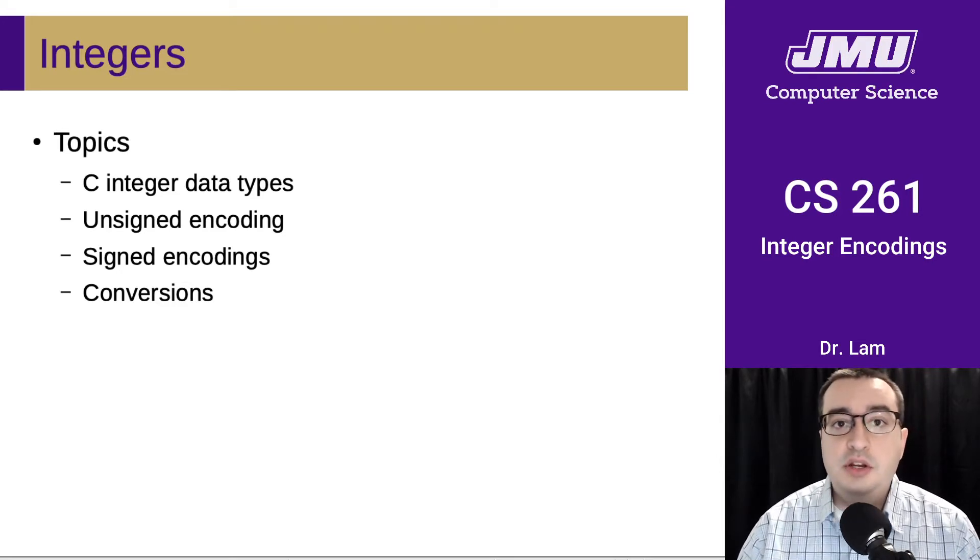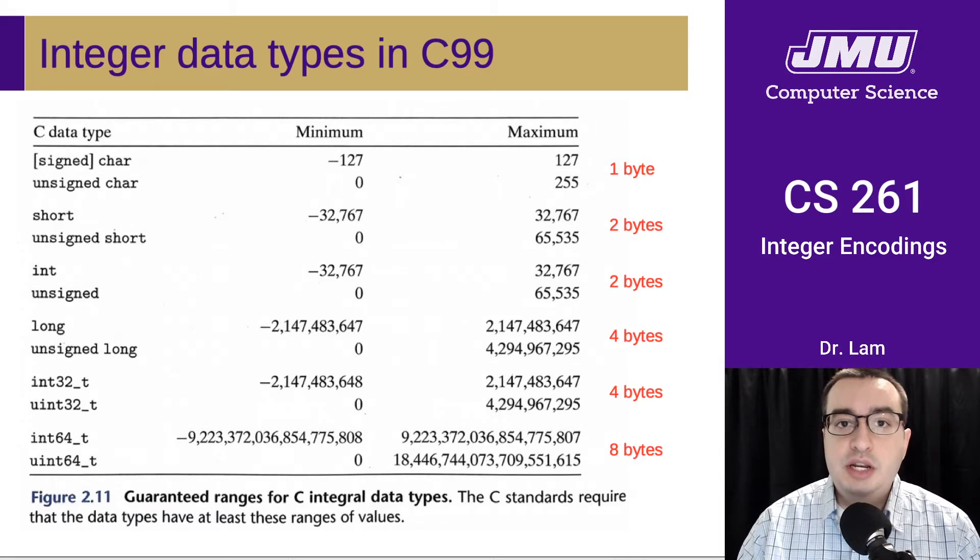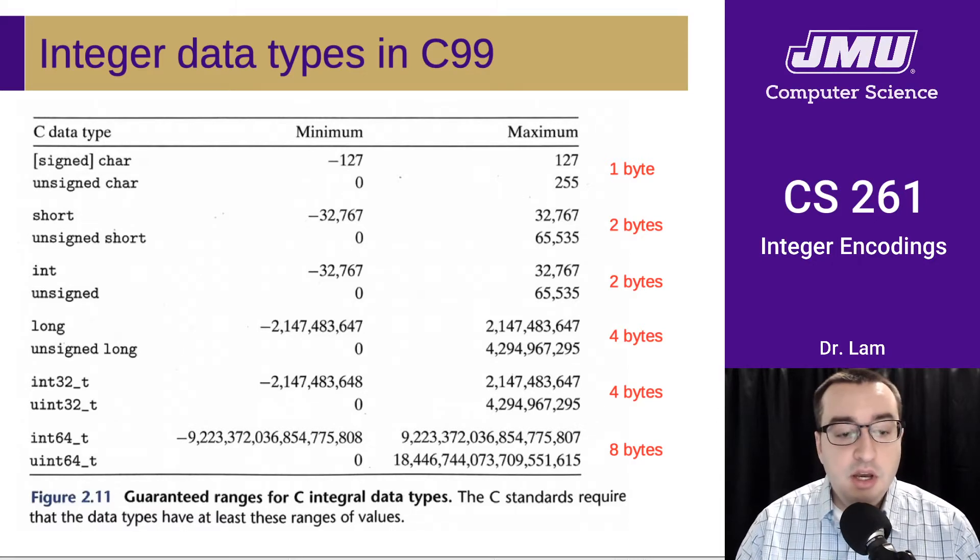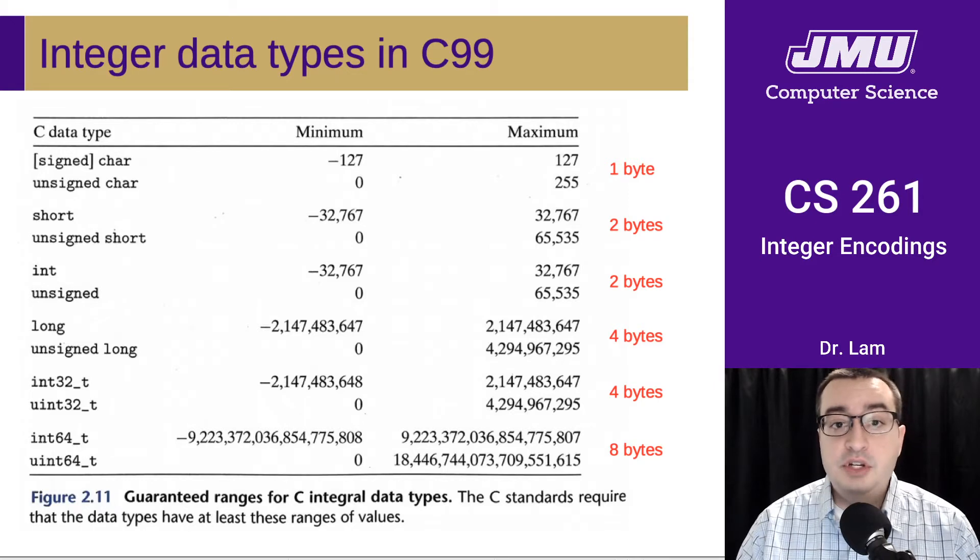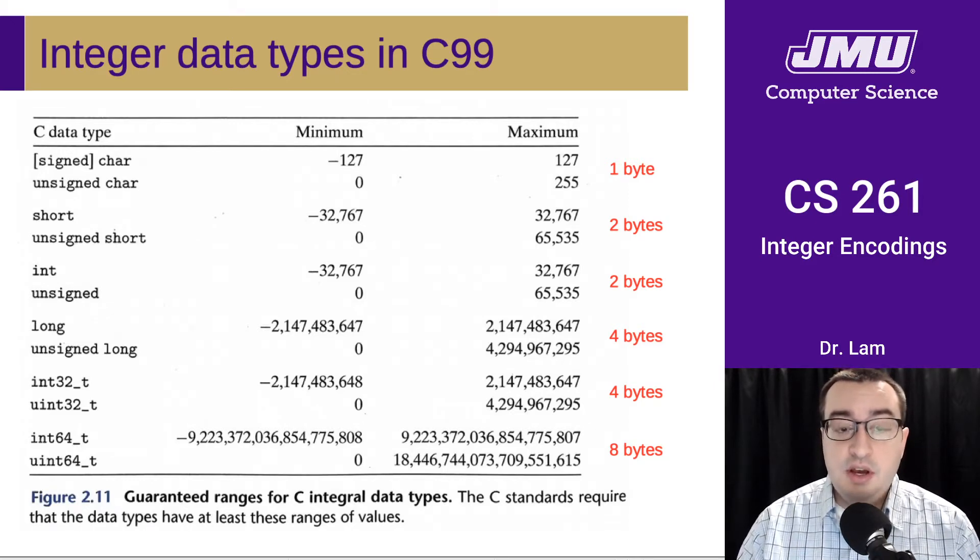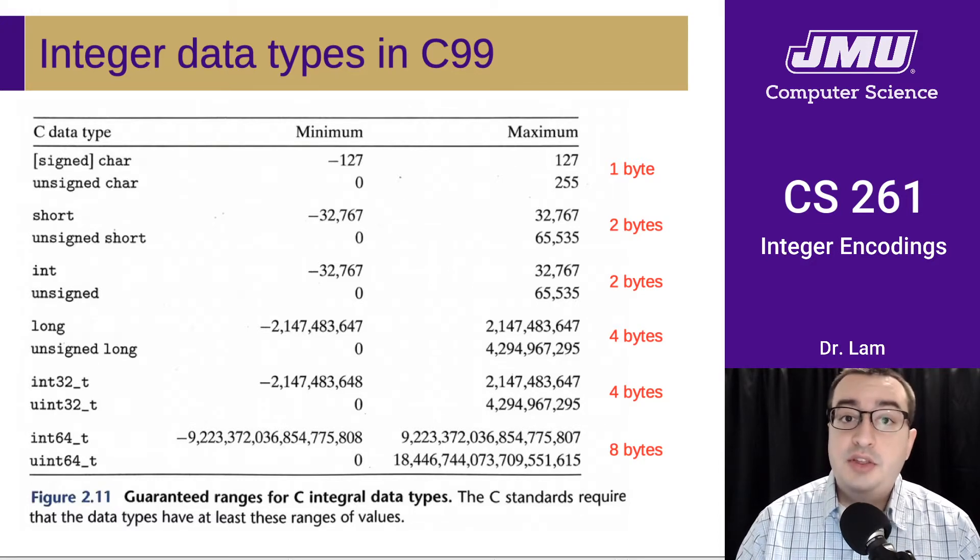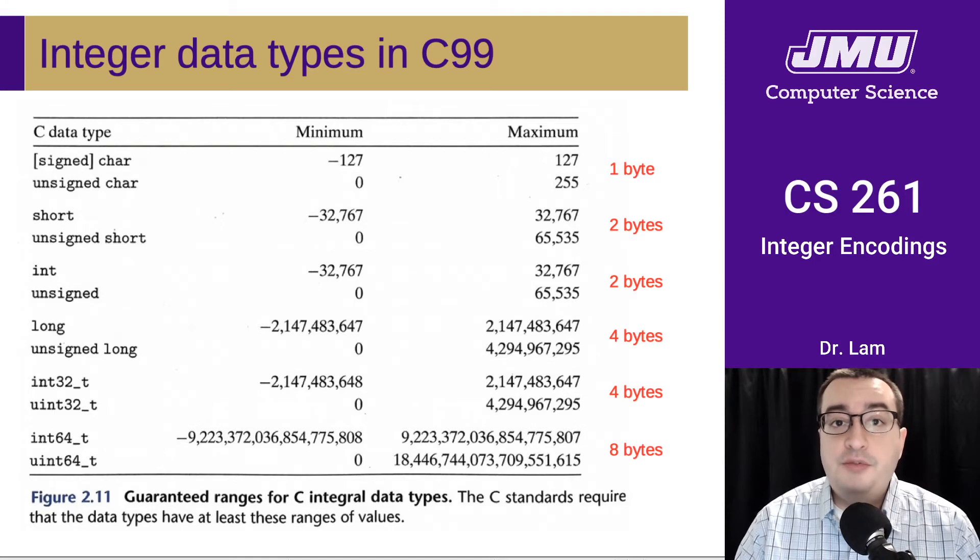So here are the integer data types that are guaranteed to be available in the C99 standard, so you can see the minimum and maximum value that can be stored in each of these types. You'll also notice that there are regular signed and unsigned versions of each of these, and you'll notice that the signed versions, so the ones on the top, can store negative numbers, but they don't store quite as many positive numbers. Roughly half of the number space is allocated to negative numbers.